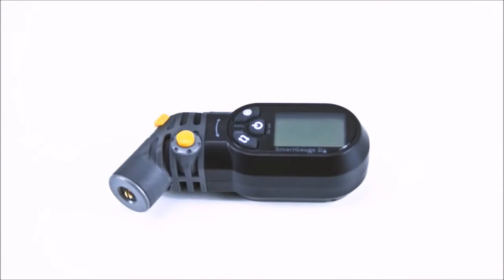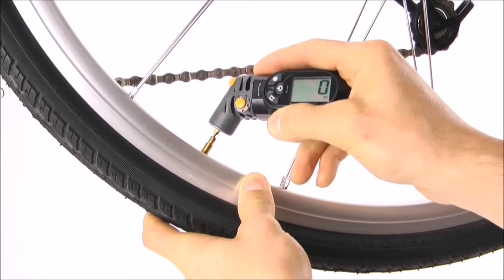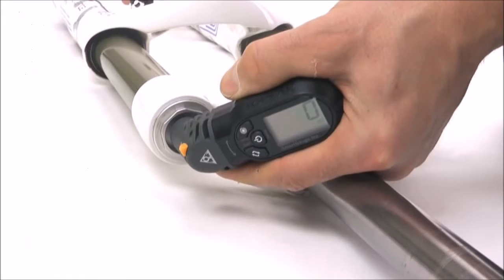This gauge is the latest in standalone digital pressure gauges from Topeak. The precision digital gauge reads up to 250 psi and can be used with tires, suspension forks, and rear shock units.